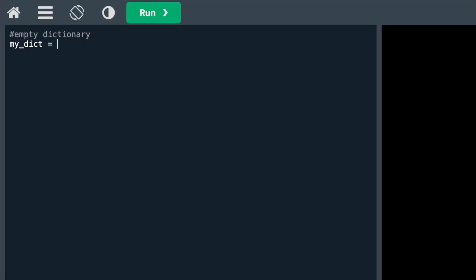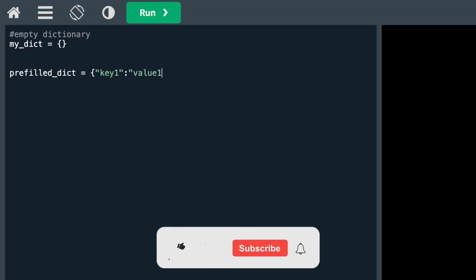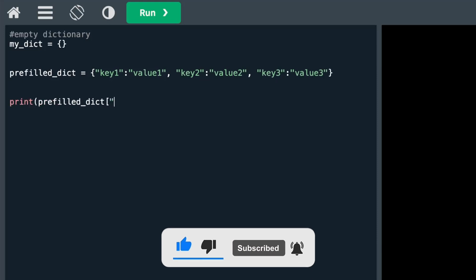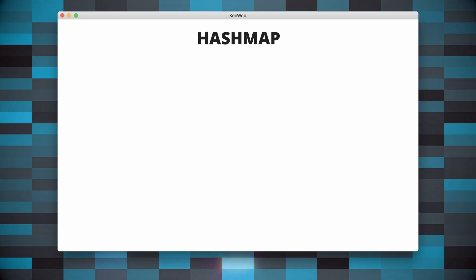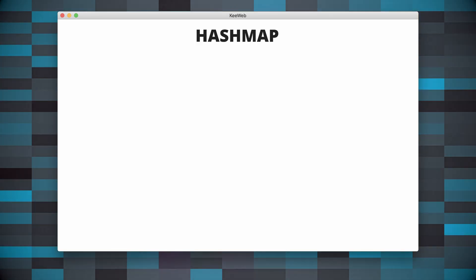In Python, the equivalent of a HashMap is a dictionary. You can use this instruction here to create an empty dictionary. To create a prefilled dictionary instead, do something similar to this. To access a value, you can simply use the key as the index.